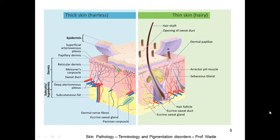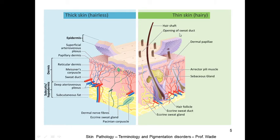This is the normal histology of the skin. The skin is generally composed of the epidermis, the dermis layer, and the subcutis or hypodermis. We usually refer to the skin as dermis and epidermis. In the epidermis you are going to see layers, and in the dermis you have structures such as the hair shaft, the opening of the sweat duct, and the dermal papilla.